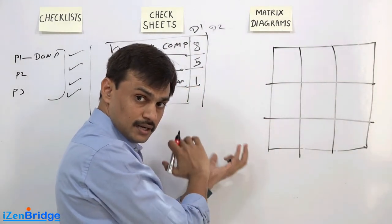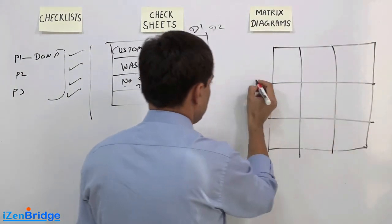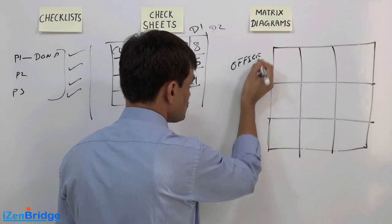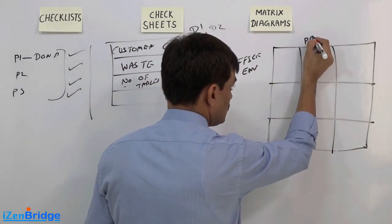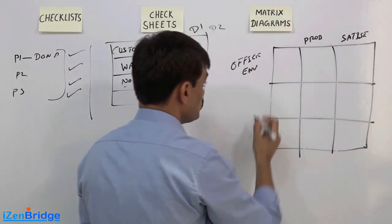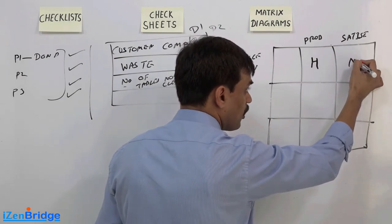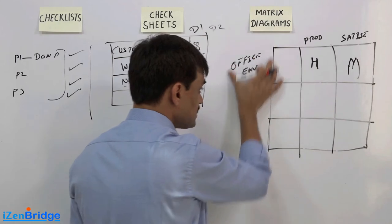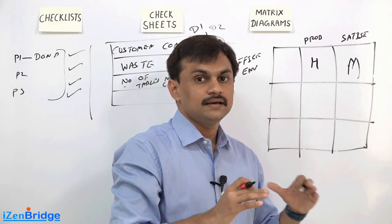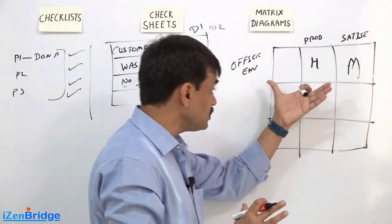You can look at how variables influence each other. For example, you may have a matrix with office environment as one variable and see how it impacts productivity and satisfaction. You might say office environment improves productivity — high impact — and has a moderate impact on satisfaction. You can give a scale of 1 to 10 or high, medium, low. So you have some variables on one side, some set of things on the other, and you can see how they relate with each other.